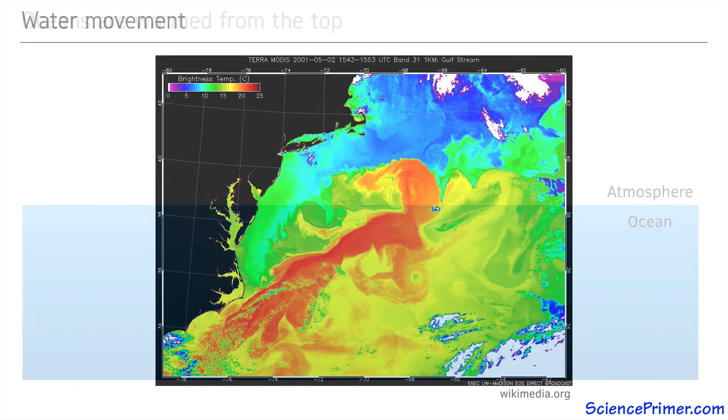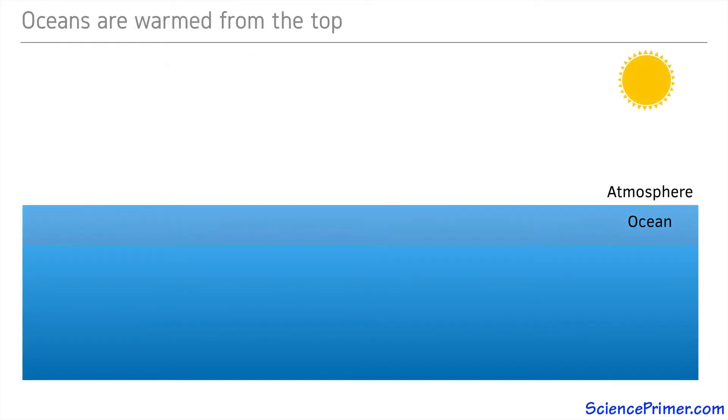Unlike the atmosphere, the oceans are warmed from the top down rather than from the bottom up, so heat-driven convection is not enough to cause ocean circulation.